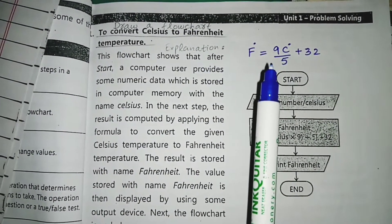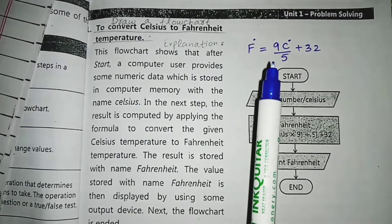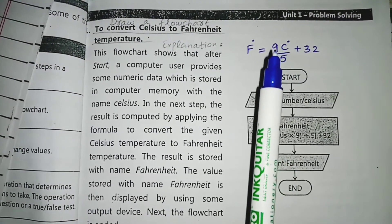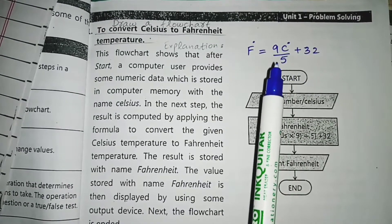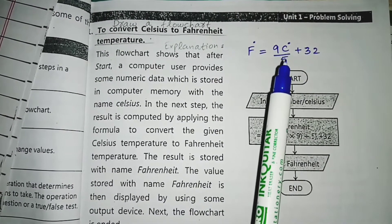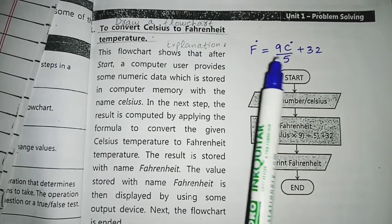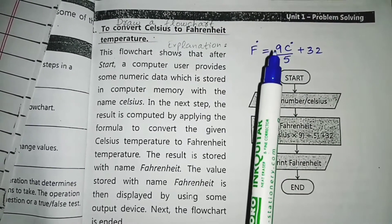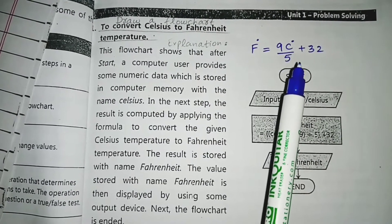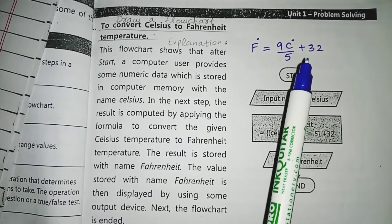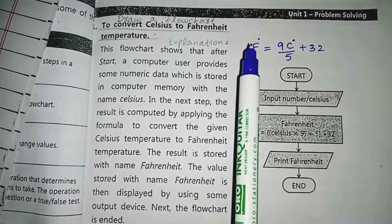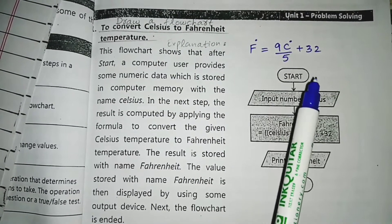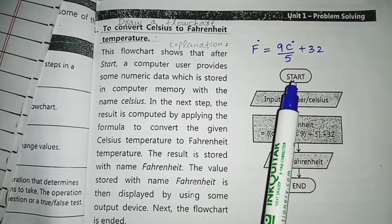This formula is used to convert Celsius to Fahrenheit temperature. Simply, C — the Celsius temperature — is required. We multiply this value by 9 and divide by 5, then add 32 to get the Fahrenheit temperature. In the flowchart, there is an oval shape at the start. After that, there is a parallelogram, which is the input symbol.